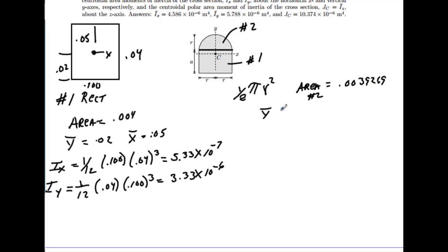Its y bar, if you look this up in calculation, in any type of book, it will be 4 times the radius over 3 pi. That's the distance from here up. Put a little red dot where its centroid is somewhere right in here. When we run that value, we will get its centroid or y bar as .02122. Its x bar from here to here would also equal .05.